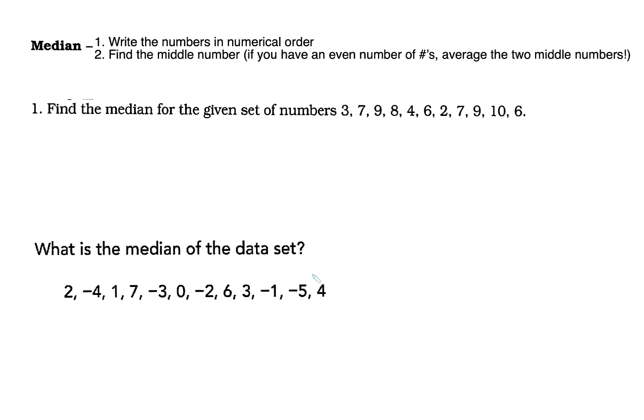Now, median means middle number. To find the median, the first step is to write your numbers in numerical order from least to greatest, then find the middle number. There are two things you must know: you can have an odd data set or an even data set. If you have an odd data set, you can directly pick the middle number. But if you have an even data set, you'll have to add the two middle numbers and divide by two.